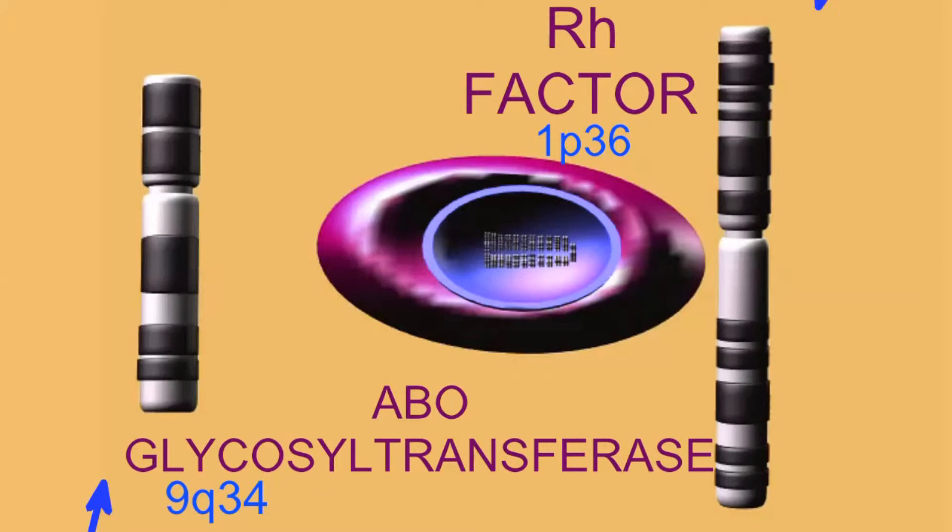The Rh factor is encoded by a gene on chromosome 1p36.